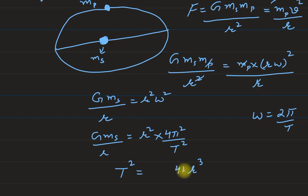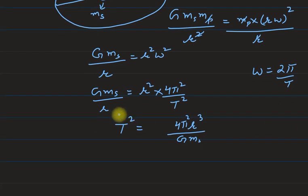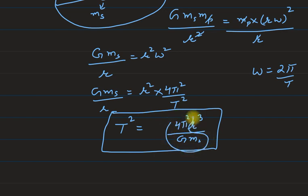This is r³ and here it is 4π² r³ upon G mass of sun. This is the deduction of Kepler's Third Law. 4π², G, and mass of sun are constant terms, so we can say that T² is proportional to r³.